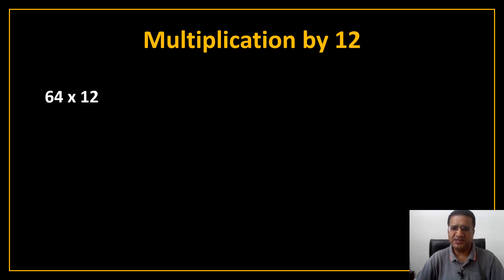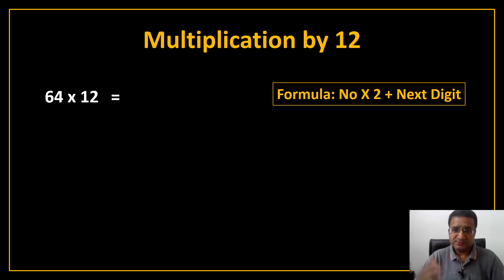64 multiply by 12. How to solve it? And see it very very carefully. Same formula. Now, 64 has 2 numbers. What are those 2 numbers? 6 and 4. You are very intelligent. Now, write down 6 as it is and start applying the formula. The first digit will come as it is and then you have to apply the formula. So, the formula says number multiply by 2 plus next digit.